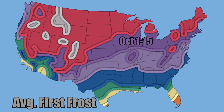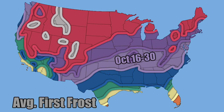October 16th through 30th in this light purple zone covers parts of the Northwest except coastal Oregon and California. That light purple area continues through the central and southern plains, into the Ozarks, the mid-Mississippi River Valley, the Tennessee Valley, through the southern Appalachians, and up through the Mid-Atlantic. That rounds out the month of October for average first frost within this area.